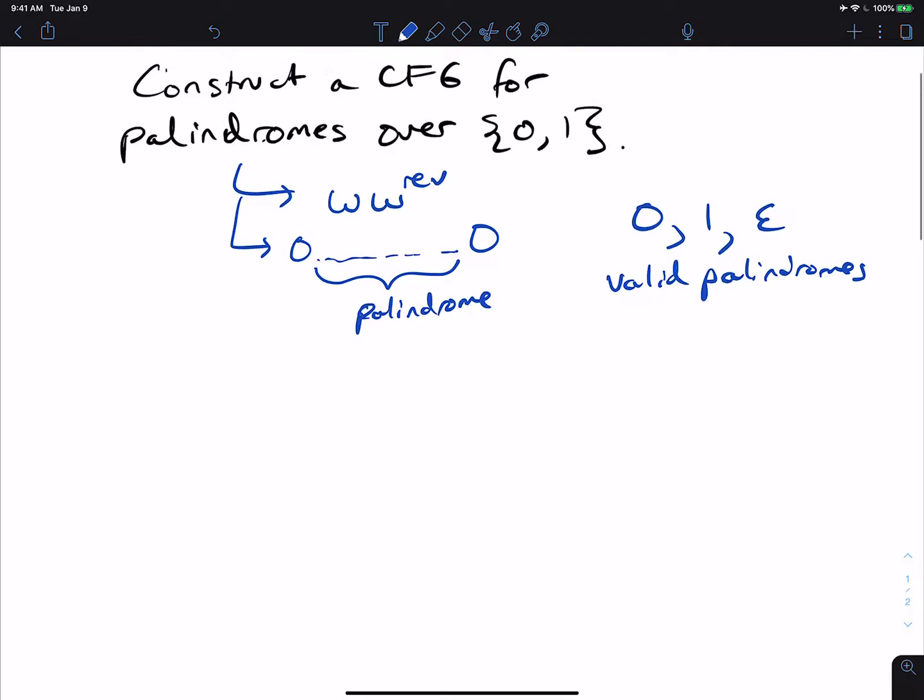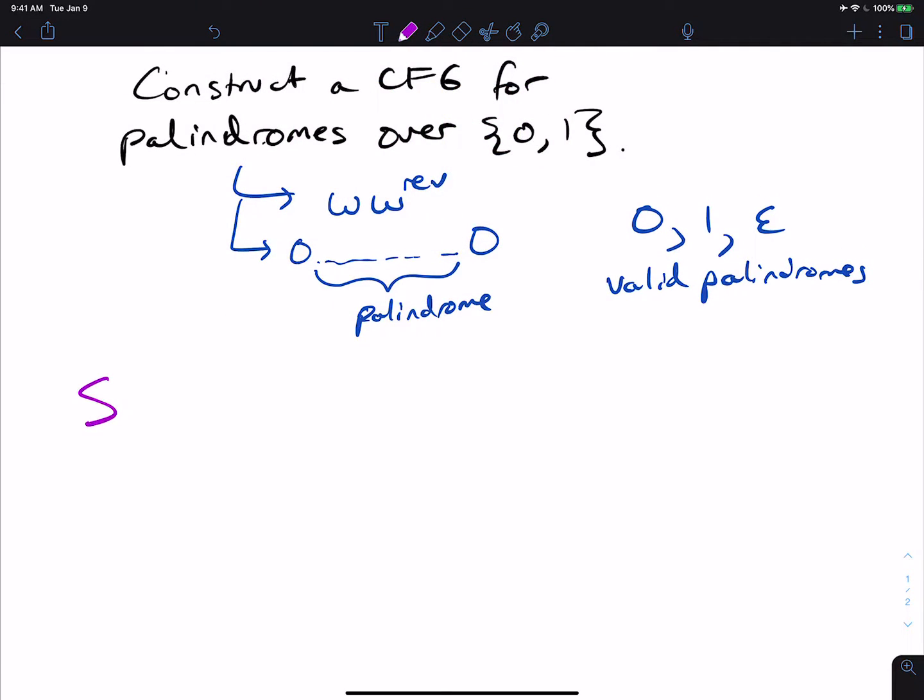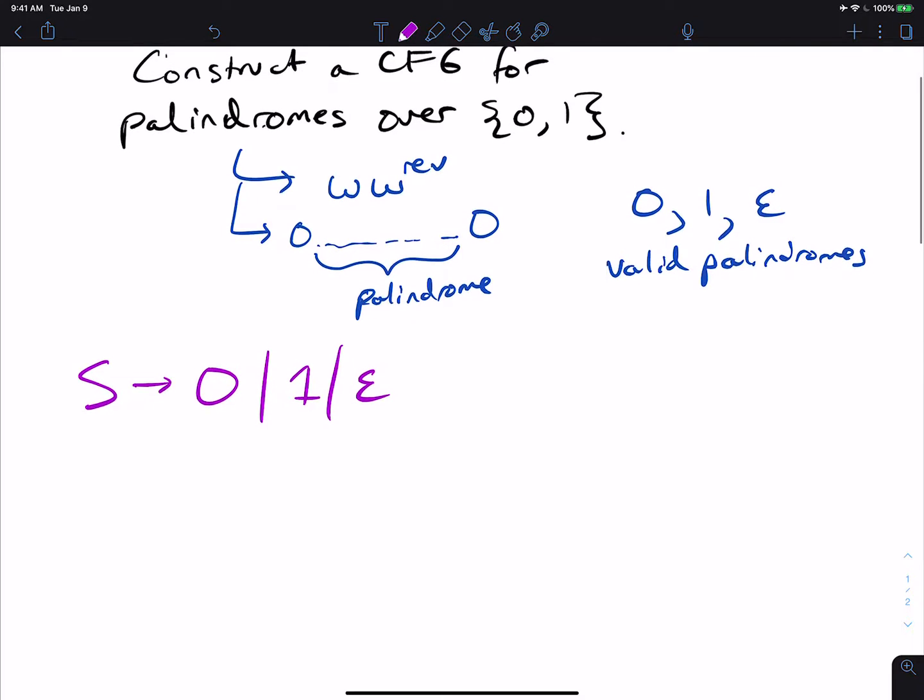So how are we going to make a context-free grammar for this? Well, we need to have a variable to start with, S. Well, 0, 1, and epsilon are valid palindromes, so let's include all those in. So all those have to be strings that we can generate.